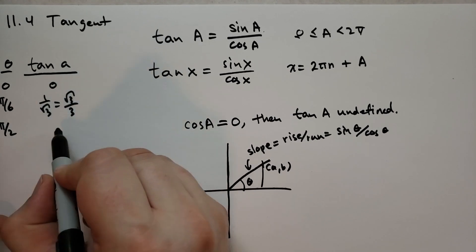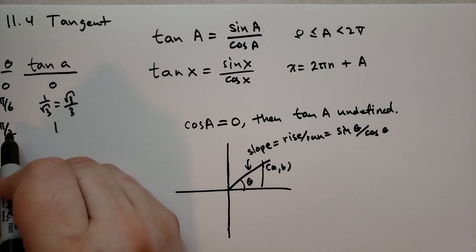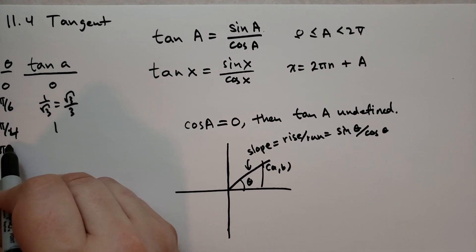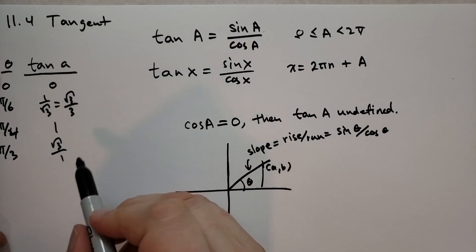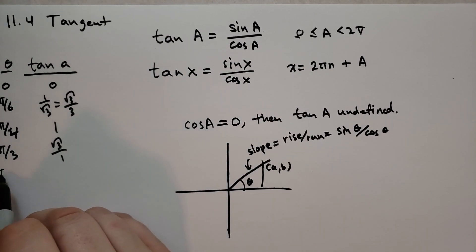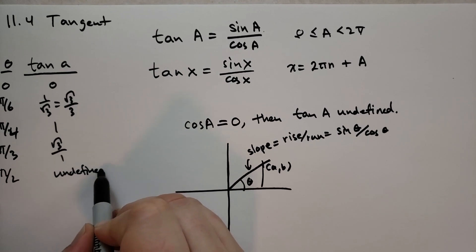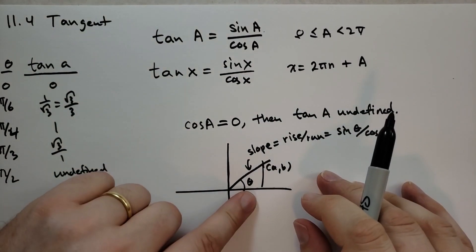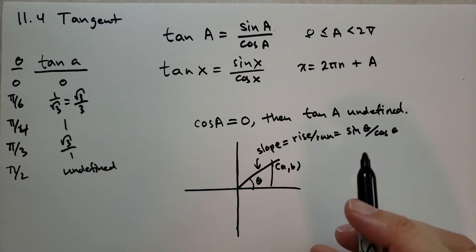And when π over two, then the slope is one because sine and cosine are equal to each other. Now this is π over 4, I'm sorry. And then we have π over 3. Well, now we have root of three over one. And then when we have π over 2, that's going to be undefined because cosine of π over 2 is actually zero, so we can't divide by zero.